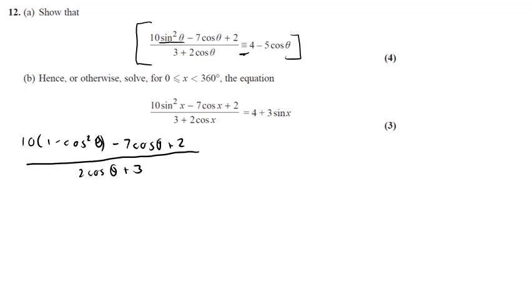Then after that, if I expand and simplify my numerator, I get 10 minus 10 cos squared theta minus 7 cos theta plus 2, which therefore means on my numerator I'll end up with 12 minus 7 cos theta.